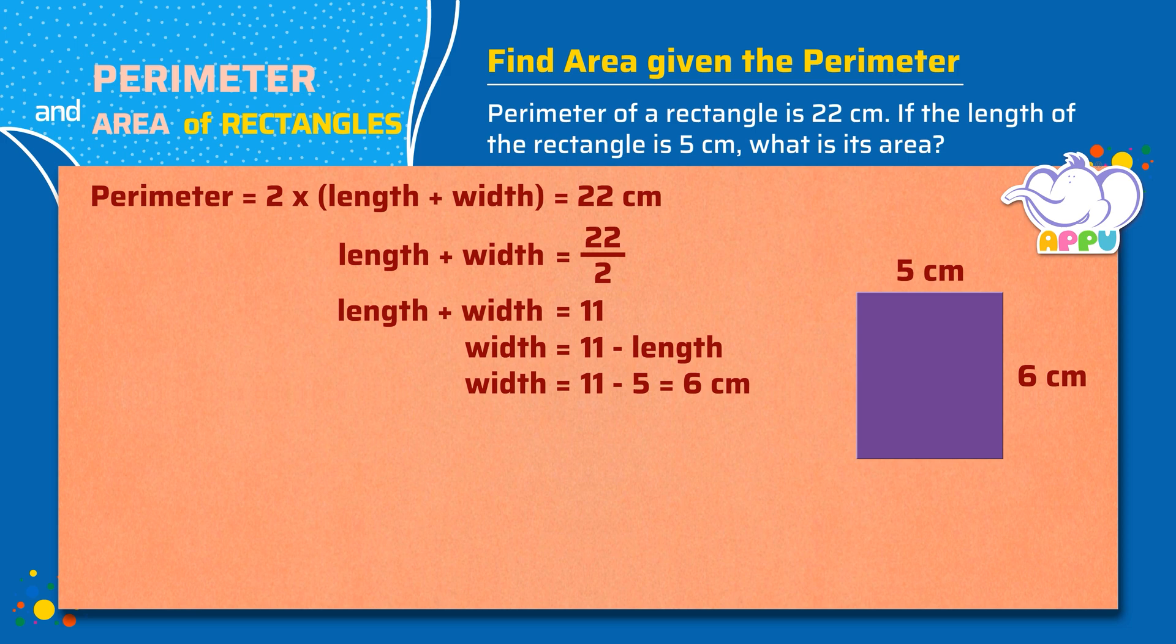Now that we know the length and the width, we can use the formula to find the area of a rectangle, which is length times width.